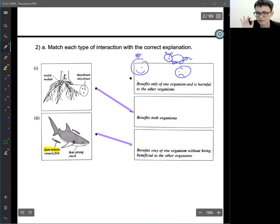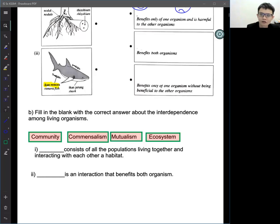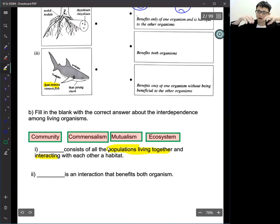Okay, so for question B, fill in the blank with the correct answer about the relationship among the organism. One: consists of all the population living together and interacting. So they are living together and interacting. So what is the answer? Population living. What's the answer, Megan? Community.